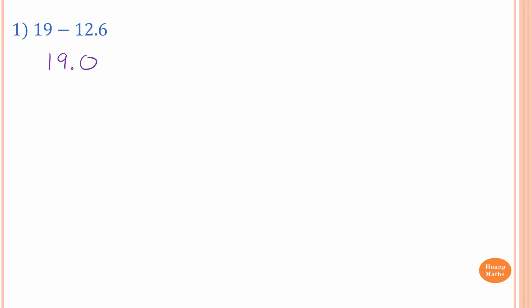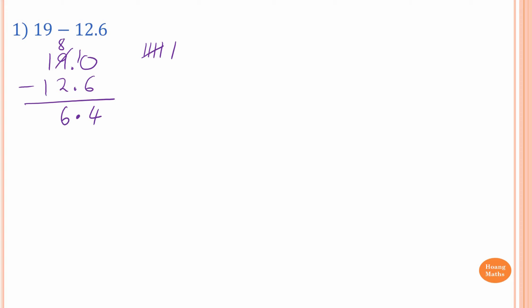First one: 19 minus 12.6. Remember 19 is the same as 19.00, then minus 12.6. So 0 cannot take away 6 — we borrow 1 from 9, it becomes 8, and 0 becomes 10. 10 minus 6 is 4. If you cannot do it in your mind, start from 6 and count up to 10: 7, 8, 9, 10 — it's 4. Write down the decimal point first — very important. 8 take away 2 is 6. And 1 minus 1 is 0. So that is 6.4.